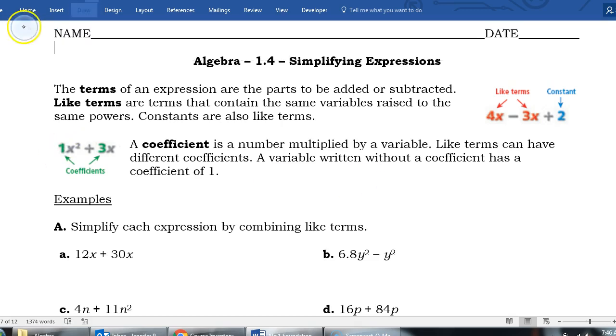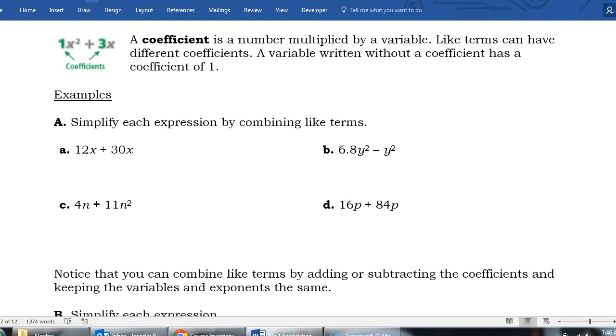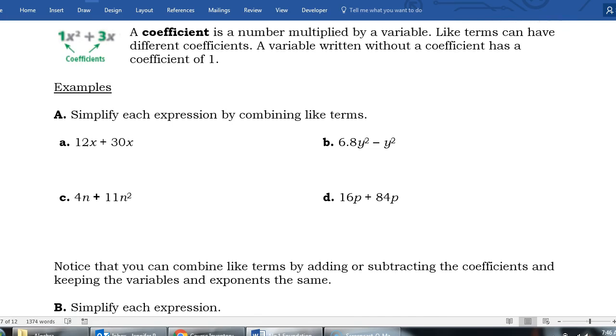Let's go down to our first example. Example A says simplify each expression by combining like terms. If I look at my first one, I have 12x and I have 30x. These are both like terms because they both have a single x as the variable. So because those are like, I can simplify this by combining the coefficients of those like terms.